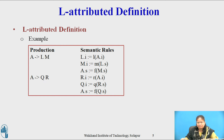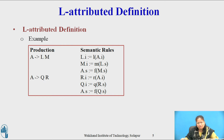But this syntax-directed definition is not L-Attributed because for the production A → QR, the inherited attribute Q.i of the grammar symbol Q depends on the attribute R.s of the grammar symbol to its right. Q.i must be evaluated before we enter Q, because it is an inherited attribute. But the value of Q.i depends on R.s, which will be available only after we return from R. So we are not able to evaluate Q.i before entering Q.